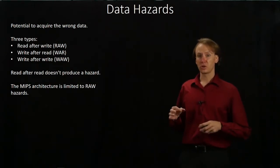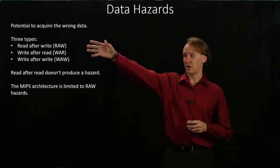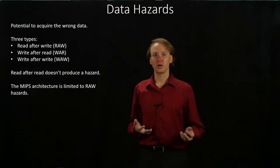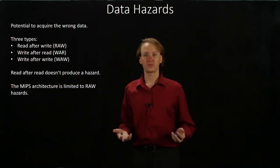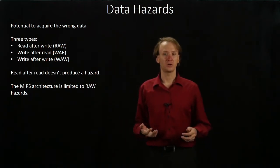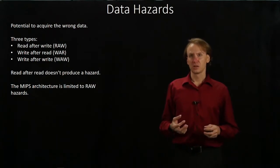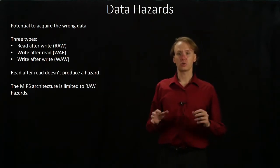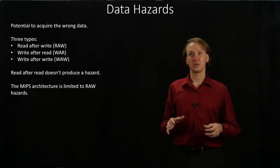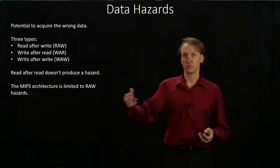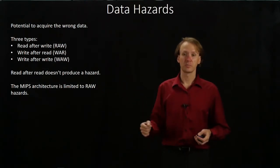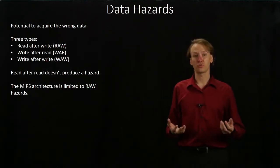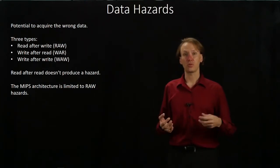We'll be looking at three different types of data hazards: read after write, write after read, and write after write. For the MIPS architecture, we're only going to be interested in one of these at the moment — the RAW hazards — but we'll see how all three of them work and how they can occur.